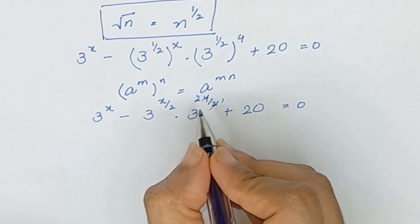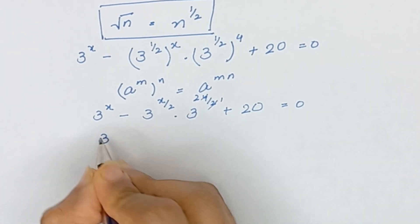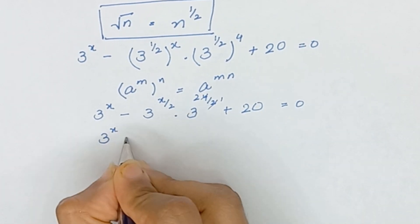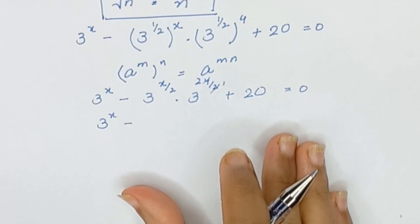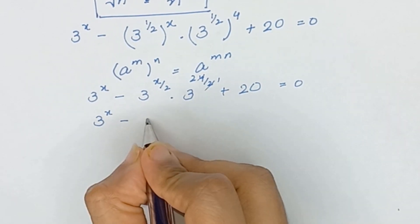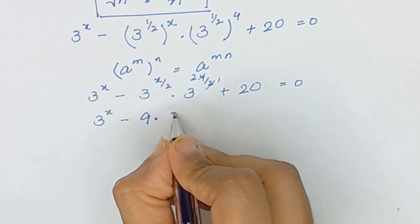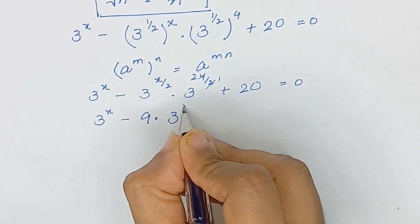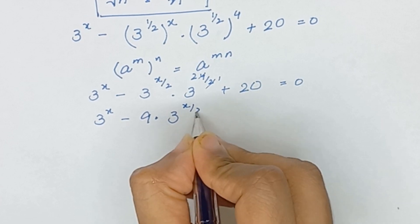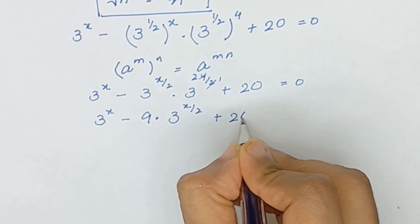3 to the power 4/2 is 3 squared, and 3 squared is the same as 9. So we can write it as 9 times 3 to the power x divided by 2, plus 20, is equal to 0.